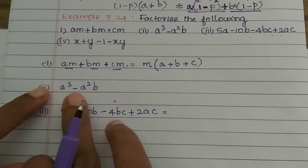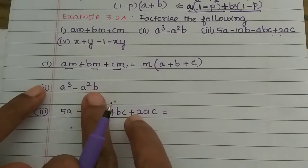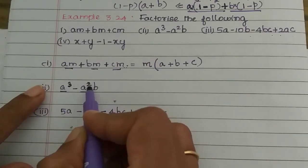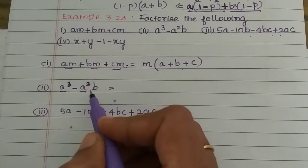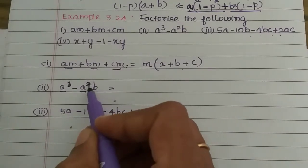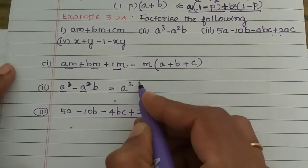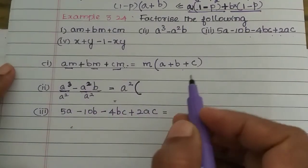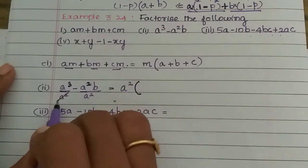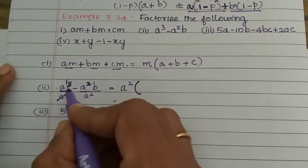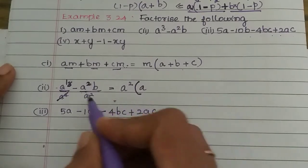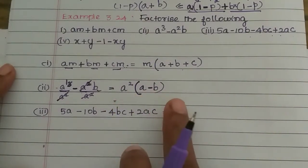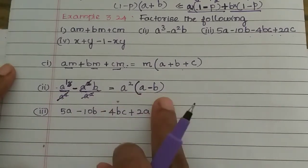Next, a cube minus a squared b. There are two terms with a minus sign. A is present in both, but the powers are different — a cube and a square. The smallest power is a square, so we take out a square as common. A cube divided by a square gives a. A squared b divided by a square gives b. So the factorization is a squared into (a minus b).